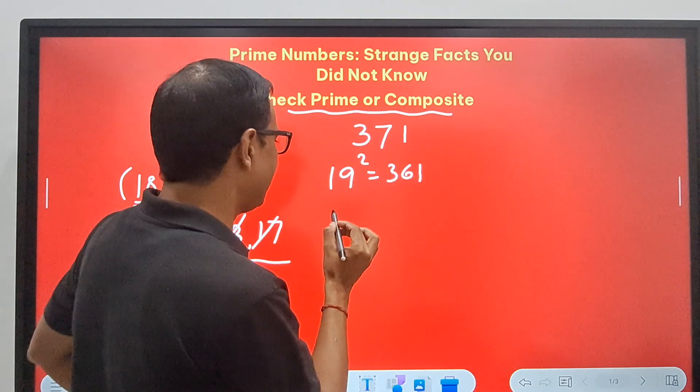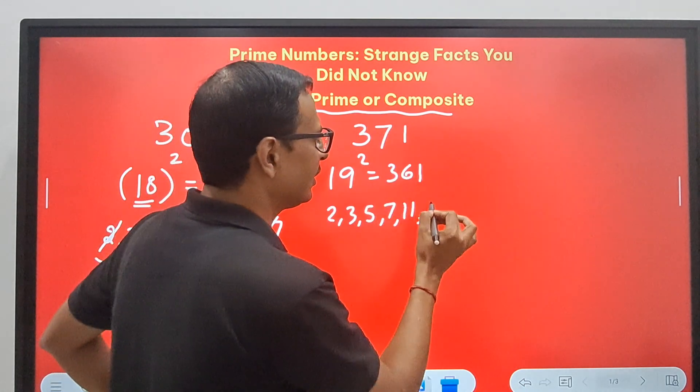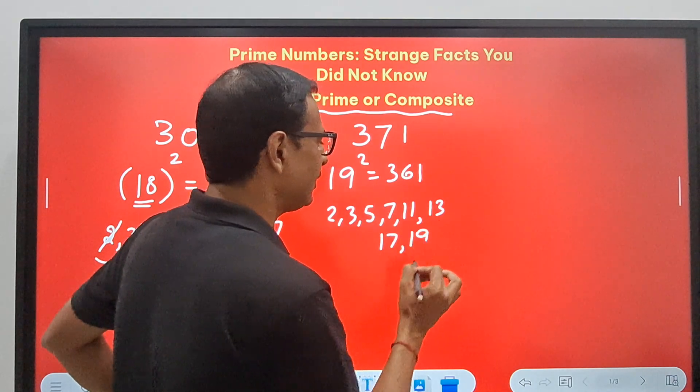So 19 square, how much is 19 square? It's 361. 20 square is 400. So 20 square. Now below 20 we have 2, 3, 5, 7, 11, 13, 17, and 19.